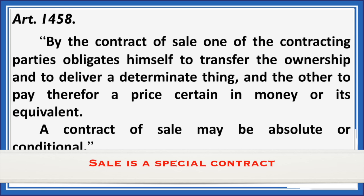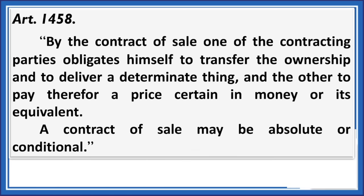Now let's discuss more on the concepts of sale. What I want to say here is that sale is a special contract. Sale is a contract — just like what we learned when we discussed obligations and contracts. If you remember the requisites of a contract: COC — consent, object, and cause of obligation. Those are still applicable. But when we say sales is a special contract, it's because there is a different set of provisions under the Civil Code that deals with it. It has rules applicable only to itself, which is why it's a special contract — but it is still a contract.